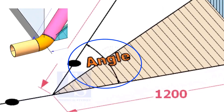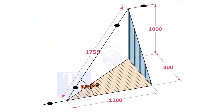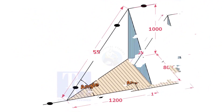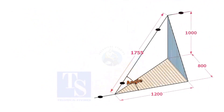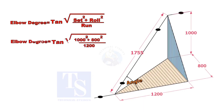Let us calculate the degree of the elbow, or the including angle. The formula is: the root of the sum of the set and the roll, divided by the run, into tan inverse.